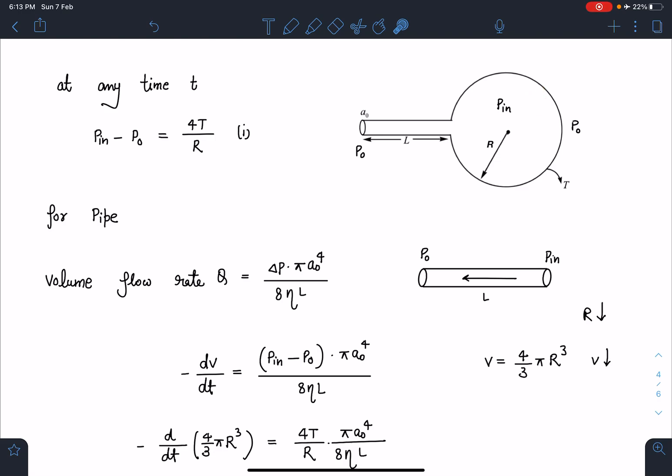So this R is changing very slowly so that we can assume this soap bubble is in equilibrium all the time and we can get this desired result.